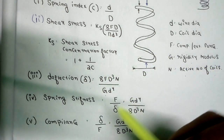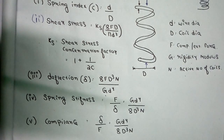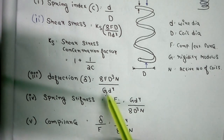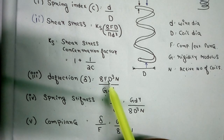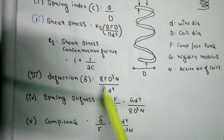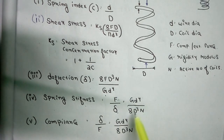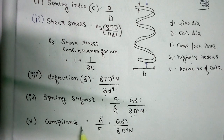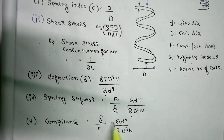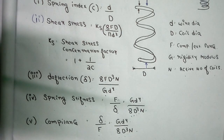Spring stiffness k = F / δ. Using the deflection formula, this gives k = G d⁴ / (8 D³ n). Compliance is the inverse of spring stiffness, so compliance = δ / F = (8 D³ n) / (G d⁴). Please remember these formulas — they are essential to solve any spring-related question in the exam.